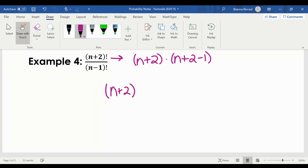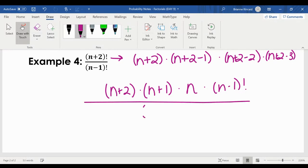n plus 2 times, n plus 2 minus 1 would just be n plus 1, times n plus 2 minus 2, which would just be n, times n plus 2 minus 3, which is n minus 1, which now you'll notice is exactly what you have in the denominator. So that's going to be all over n minus 1 factorial. I'm able to eliminate the n minus 1 factorials.